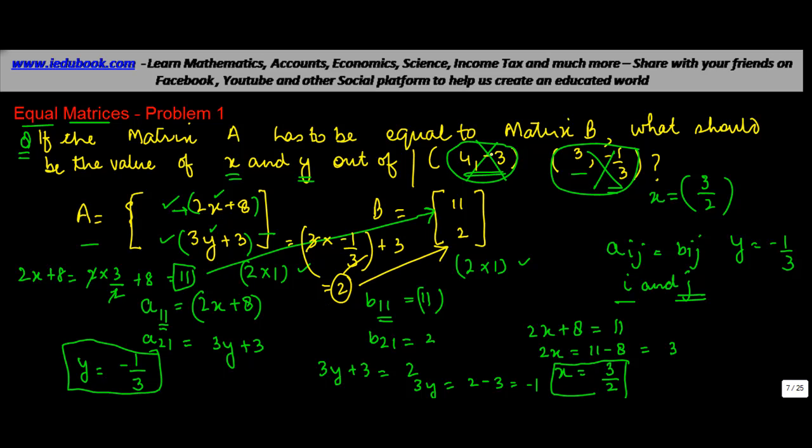So the value of x and y is not out of any of these two values. The question is incorrect to that extent. It's not out of. The values are different. That's all what mathematics is all about. We need not necessarily have the correct answers always.